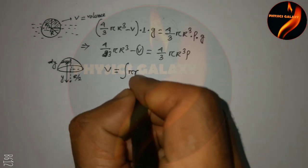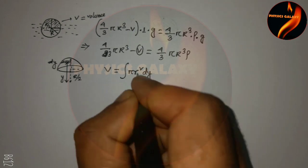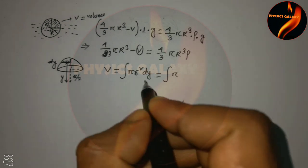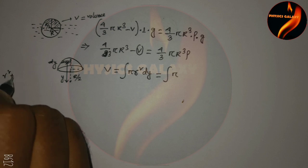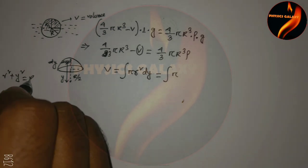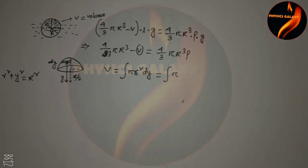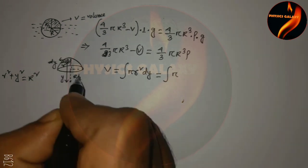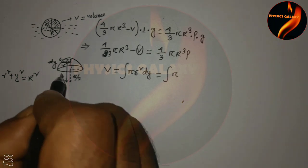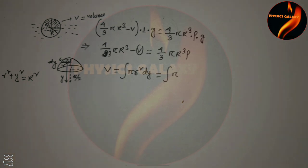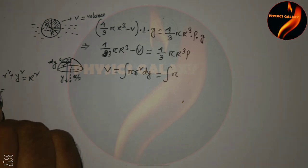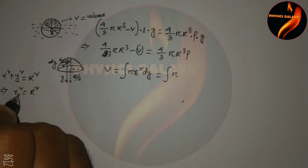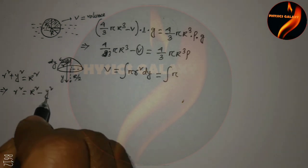We take a small disk element of thickness dy, so the volume element is π r² dy. From the sphere's geometry, the relationship is r² + y² = R², where r is the radius of the disk at height y. Therefore, r² = R² − y².